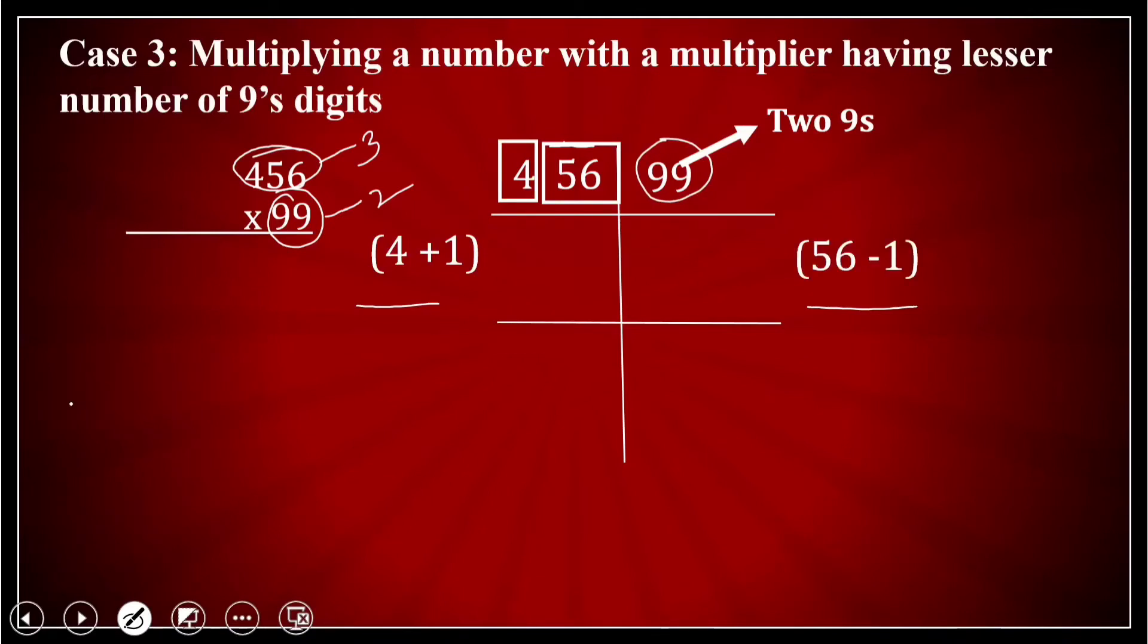What I'll do is I will add 1 to 4. And I will subtract 1 from 56. I repeat. I have taken 4 I take here and I add 1 to it. And 56 I take here and I subtract 1 from it.